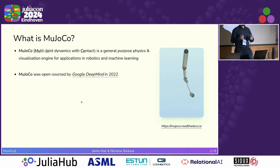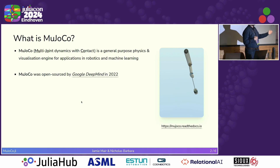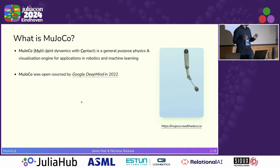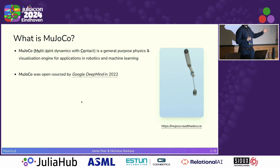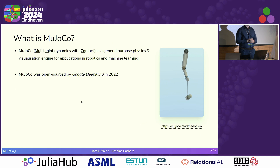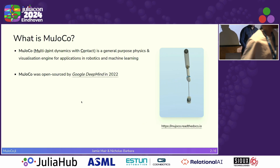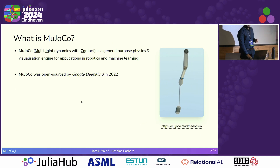MuJoCo is a pretty old project — it predates our Julia bindings by about 12 years — but it was recently bought by Google DeepMind, and they actually open sourced the project, which really helped us in making the bindings.